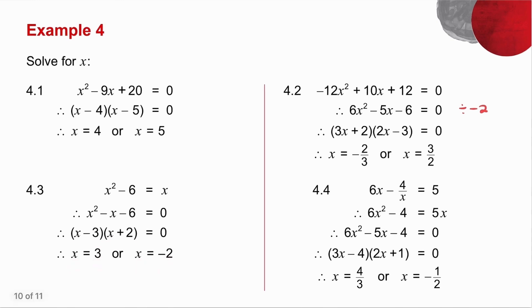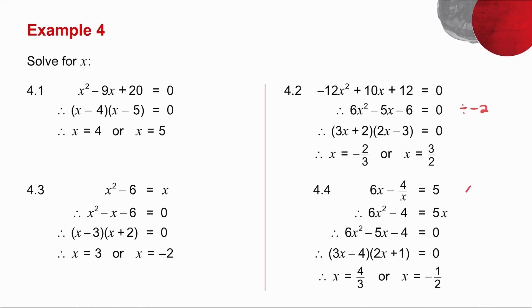Question number 4.4. I've got an equation with fractions. So I multiply every term by my denominator. So 6x times x, minus 4 over x times x, 5 times x. Write it in standard form. Ax squared plus bx plus c equals 0. Factorize the trinomial, and there are your two answers.